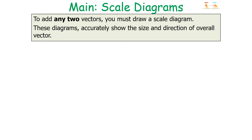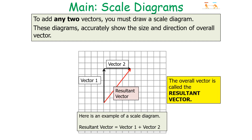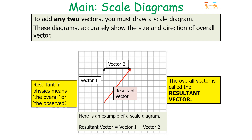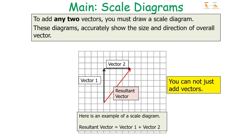To add any two vectors, you must draw what we call a scale diagram. These diagrams accurately show the size and direction of an overall vector. The overall vector can be called the resultant vector, which is the sum of the first and second vectors. Remember, resultant in physics means the overall or observed value. You can't just add vectors to each other arithmetically.